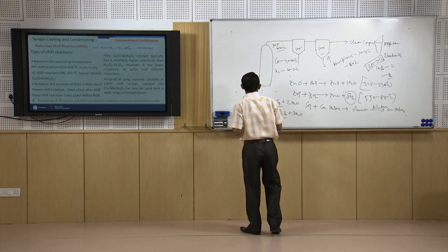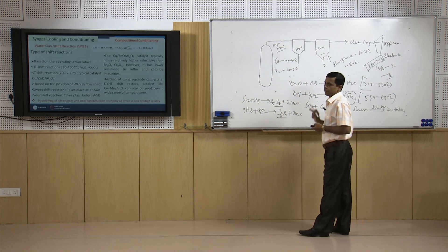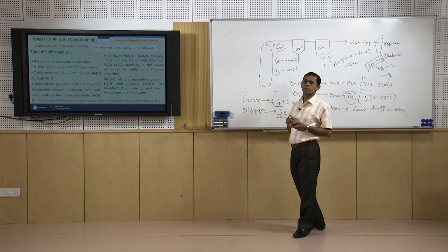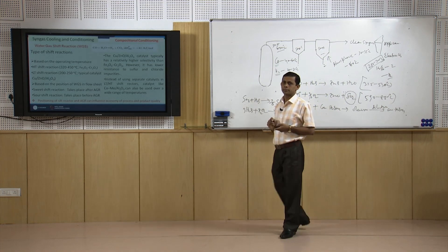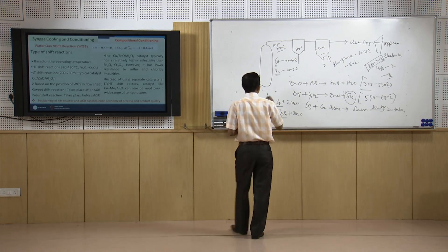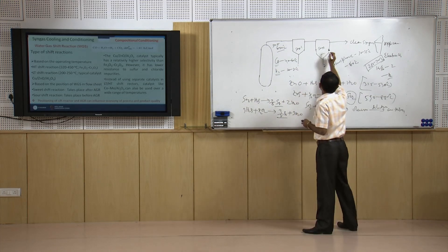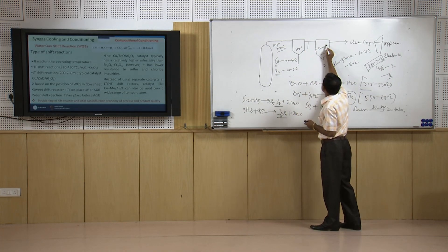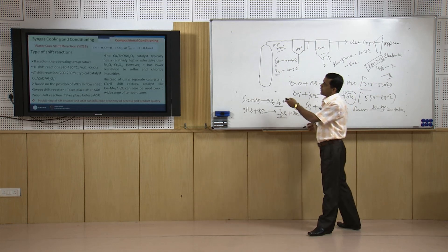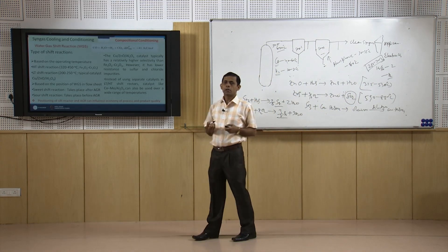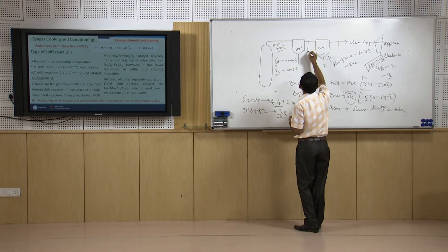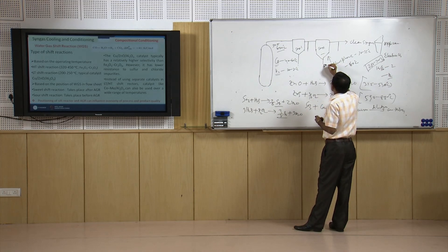Now we will concentrate on the conditioning part — how to increase hydrogen concentration and reduce CO concentration in the syngas. For this, shift reactions are carried out in a shift reactor. The shift reactor can be placed before acid gas removal or after acid gas removal, and placing it at different positions results in different phenomena, particularly different temperature profiles.